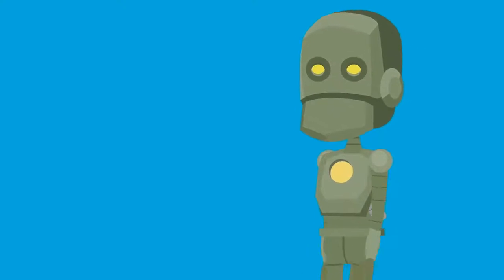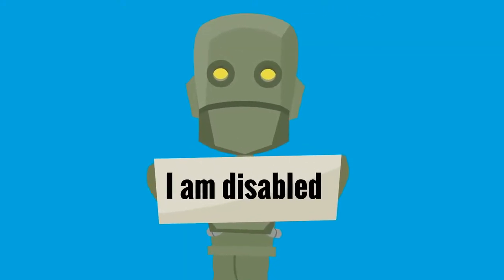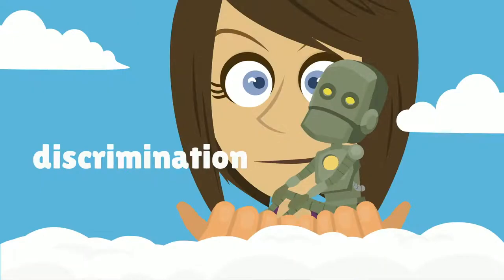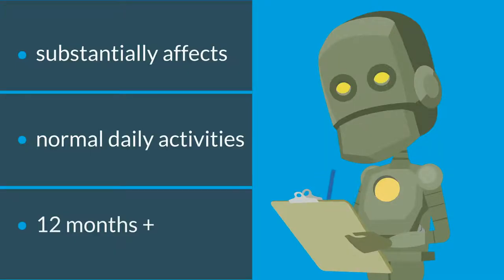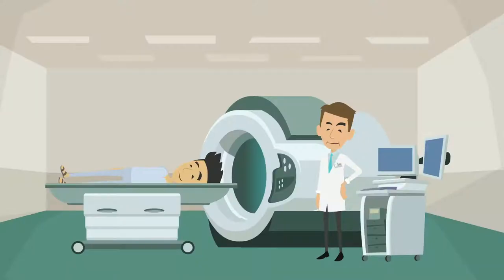Both short and long term absences can be linked to a disability. Employees who are disabled are protected from discrimination and absence should be managed with care. To qualify for protection, an employee must have a condition which substantially affects or is likely to affect their normal daily activities for at least 12 months. Some conditions such as cancer are protected from the point of diagnosis.